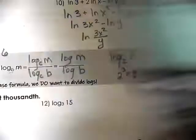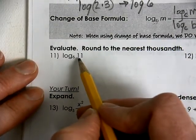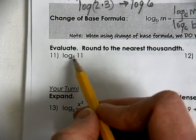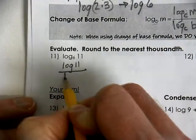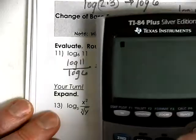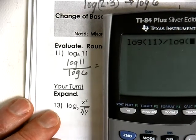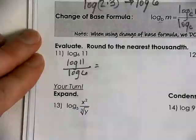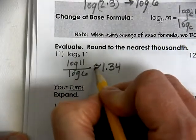Coming down to log base 6 of 11: we know 6¹ = 6 and 6² = 36, so the answer is well less than 2. Using the change of base formula: log(11) divided by log(6) gives approximately 1.334. We round that to about 1.34, using the squiggly line for an approximate answer.